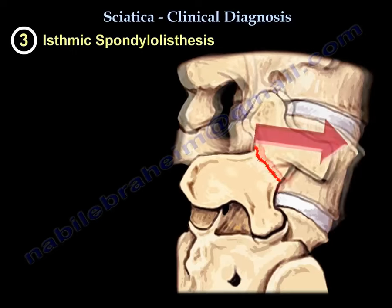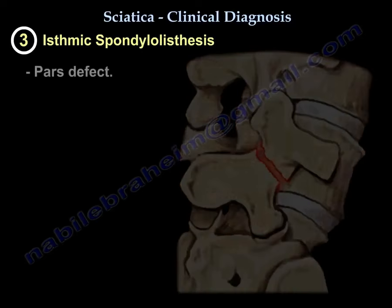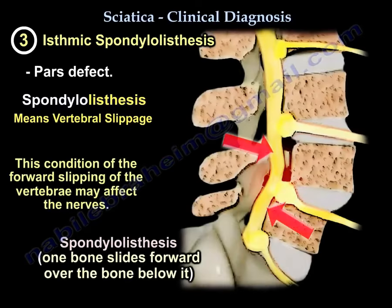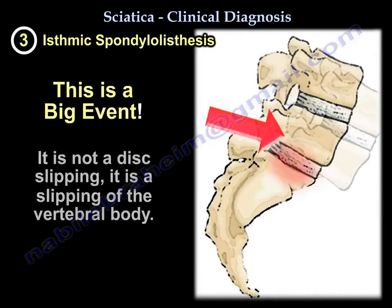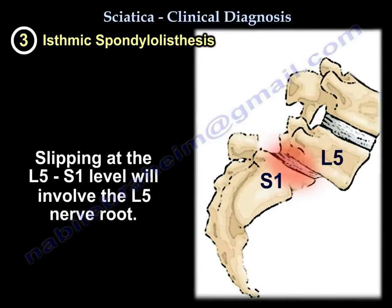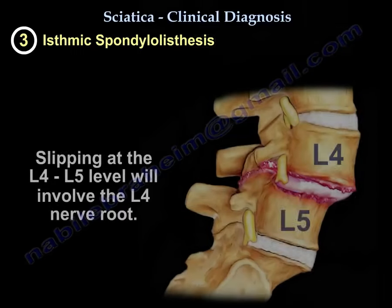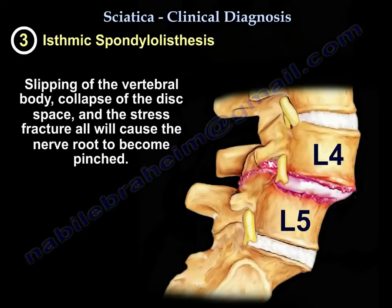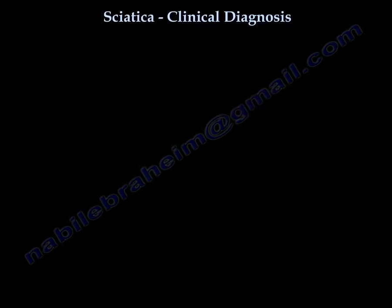Number three is isthmic spondylolisthesis. There is a pars defect — the word 'listhesis' means a slip. So the pars defect allows one vertebral body to slip forward on the other. If you have a slip at L5-S1, you will get L5 nerve root involvement. If L4 slips on L5, then you will have L4 nerve root involvement. The slipping of the vertebral body, disc space collapse, and stress fracture can all cause the nerve to be pinched.